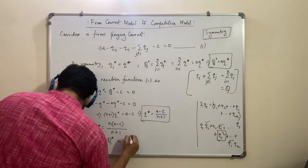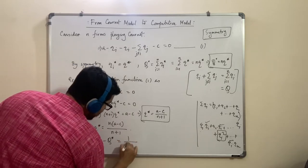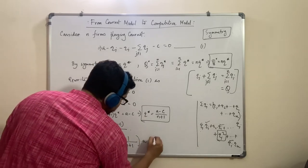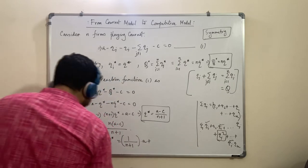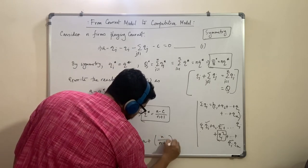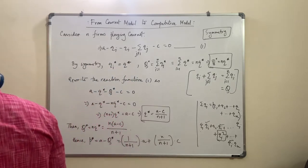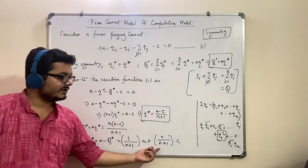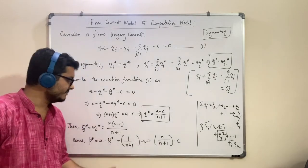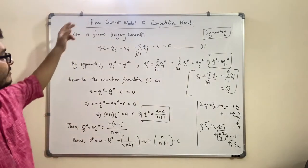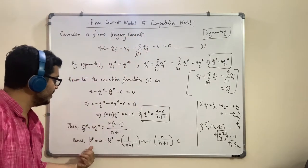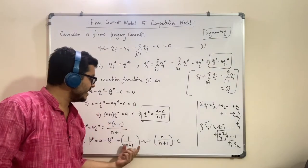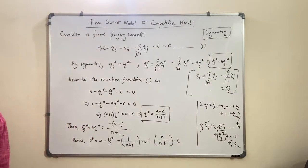Now, as n tends to infinity: limit as n→∞ of P star equals limit as n→∞ of [1/(n+1)]·A plus [n/(n+1)]·c. For the second term, dividing numerator and denominator by n: we get 1/(1 + 1/n) into c. As n becomes infinity, 1/n goes to zero, so the first term [1/(n+1)]·A goes to zero, and the second term becomes c.